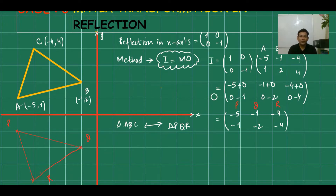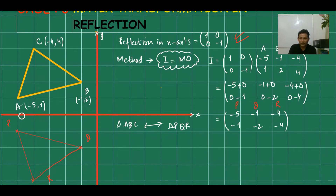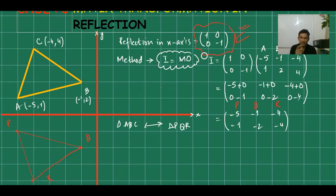Just check: I used the matrix, and the exam requires showing the matrix transformation method. In x-axis reflection, the x-axis is the mirror line. Checking point by point — one step down, two steps up and down, four steps — we have confirmed the reflection in x-axis using the matrix method. This matrix is 100% the x-axis reflection matrix.